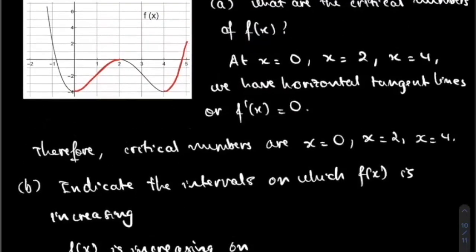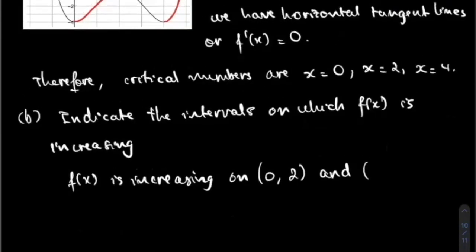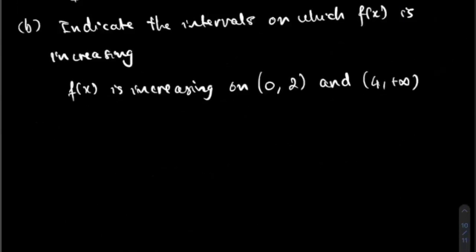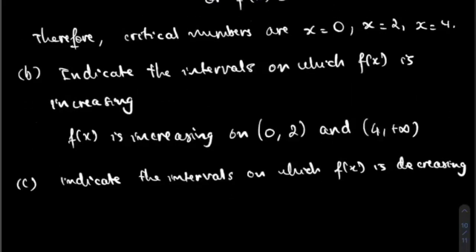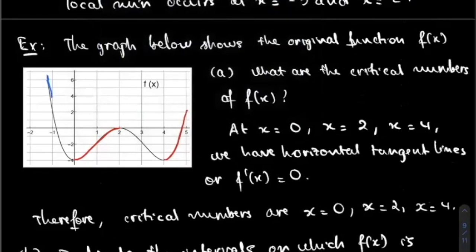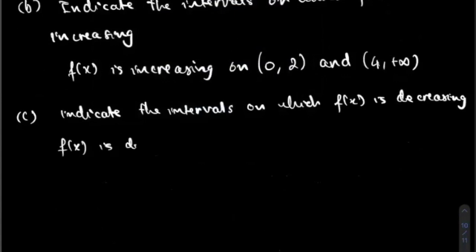You have to be able to distinguish between the two types of graphs. If we have the derivative graph, we need to check the derivative sign — positive or negative. For the original graph, you can just look at the curve where it's increasing or decreasing. So f of X is increasing on the interval from zero to two and from four to positive infinity. For part C, f of X is decreasing on the interval from negative infinity to zero and from two to four.